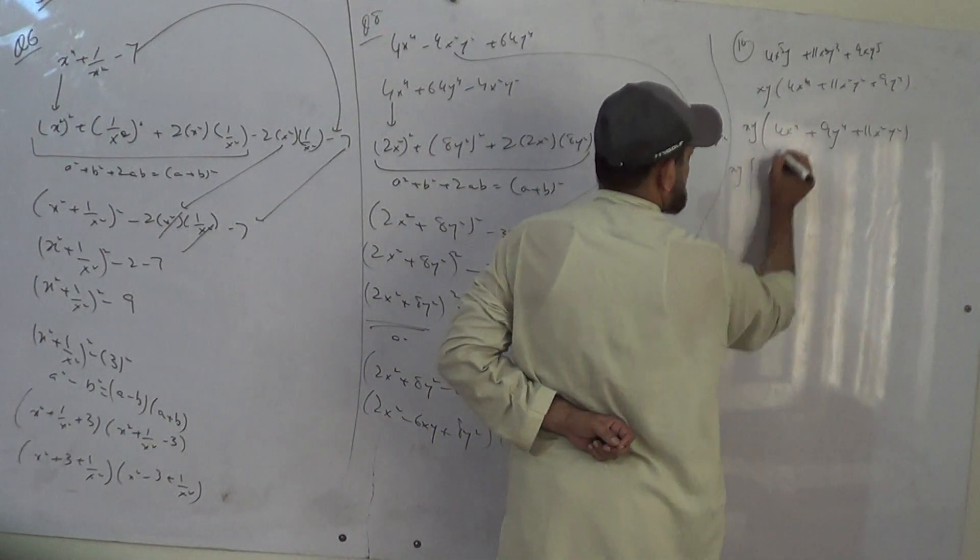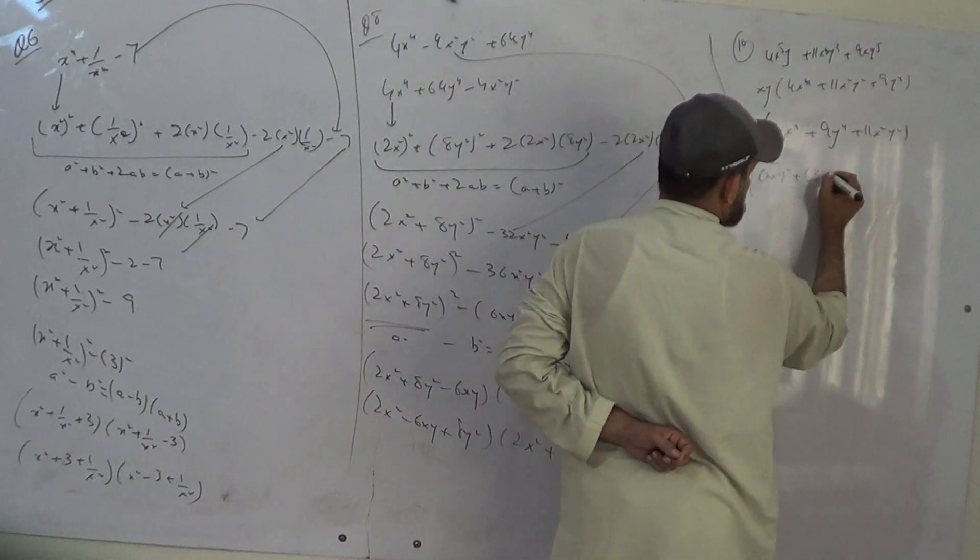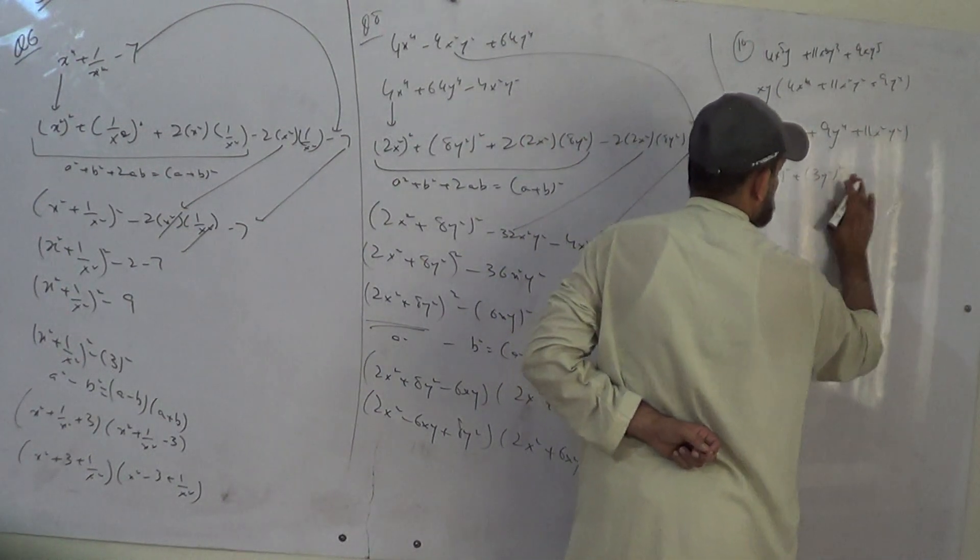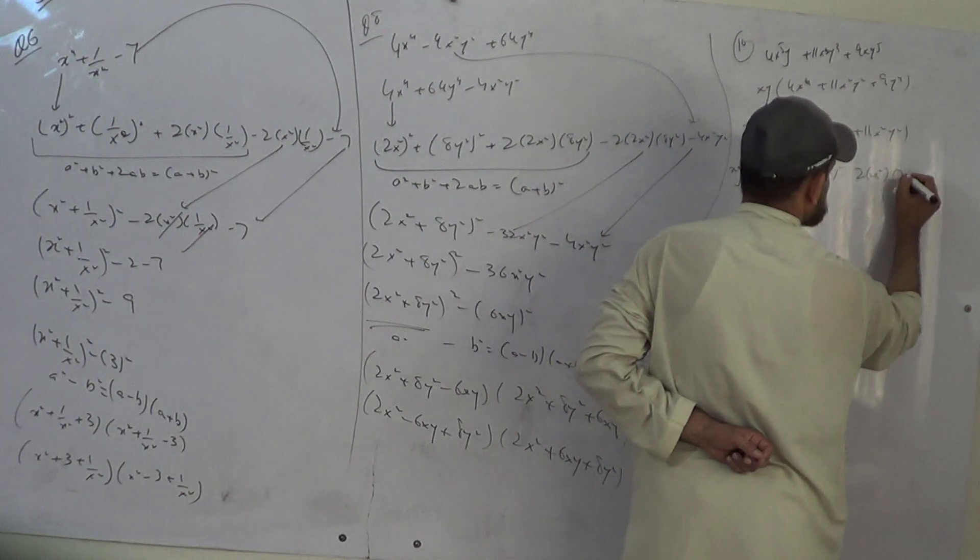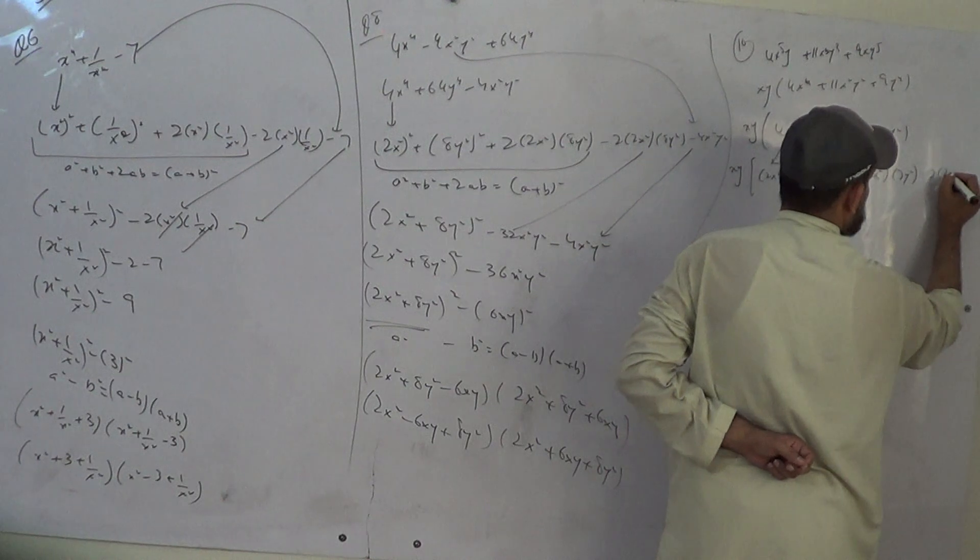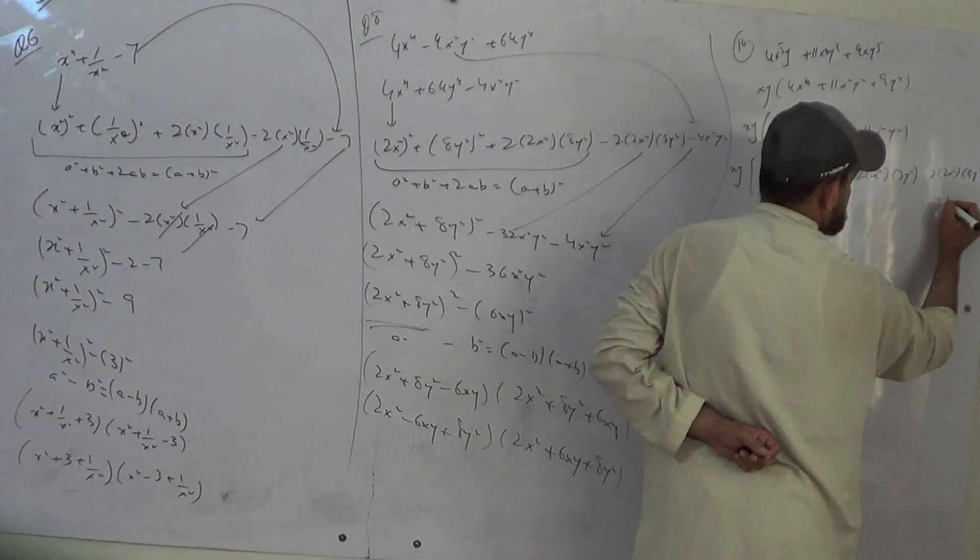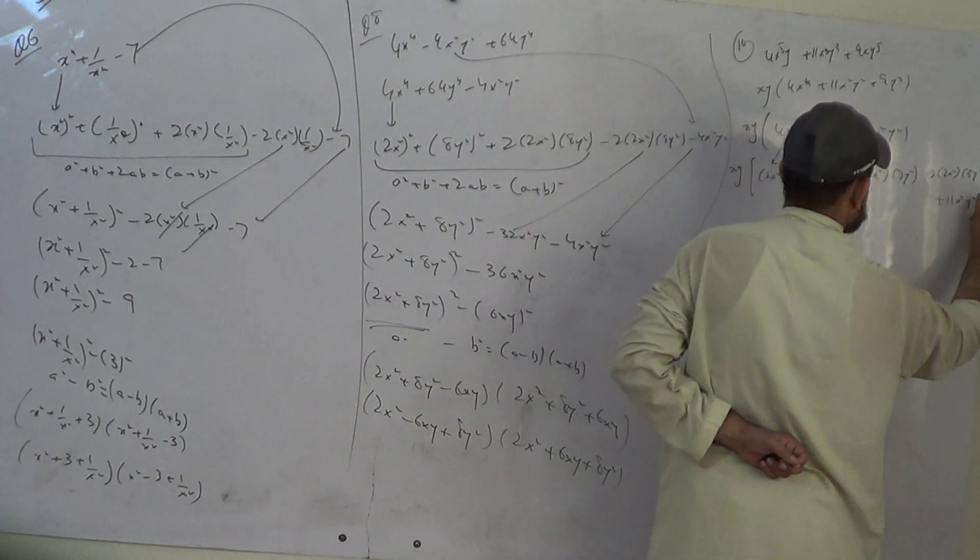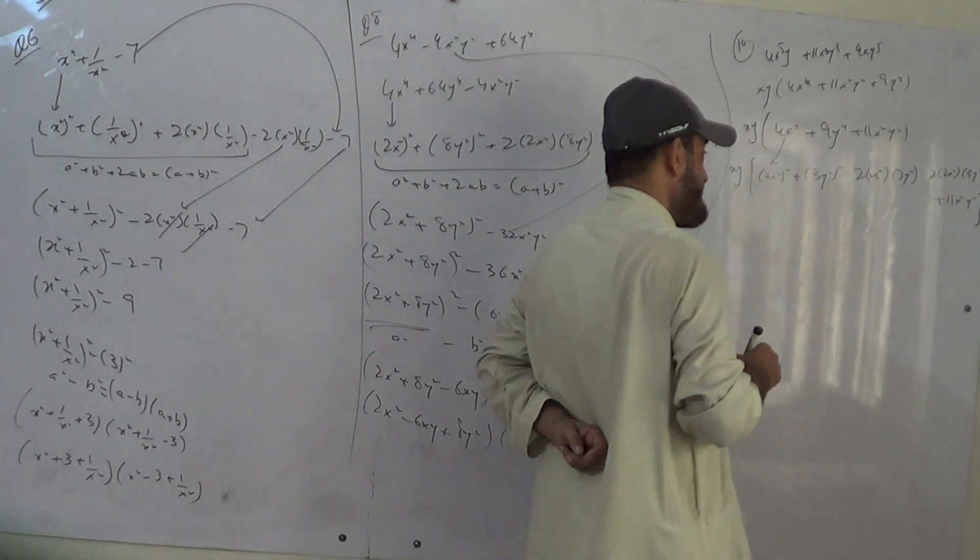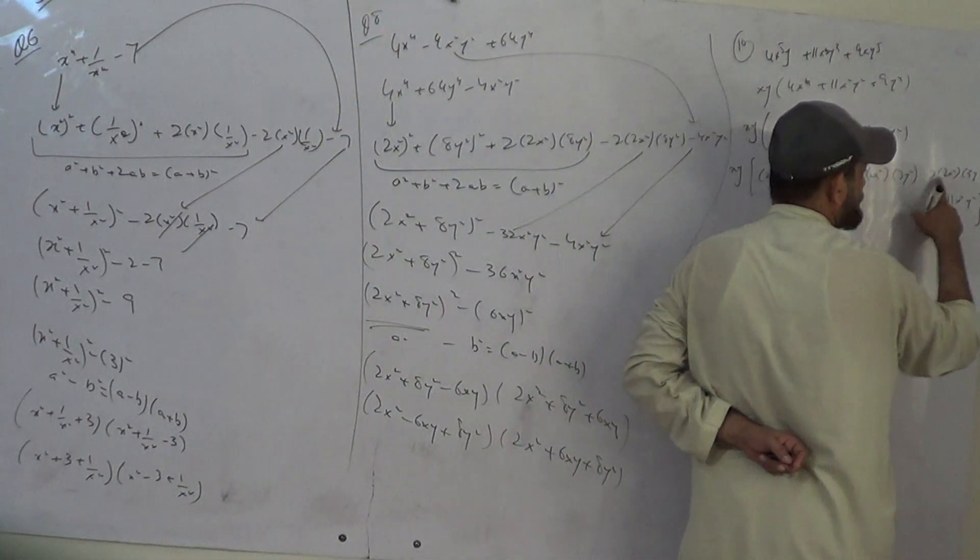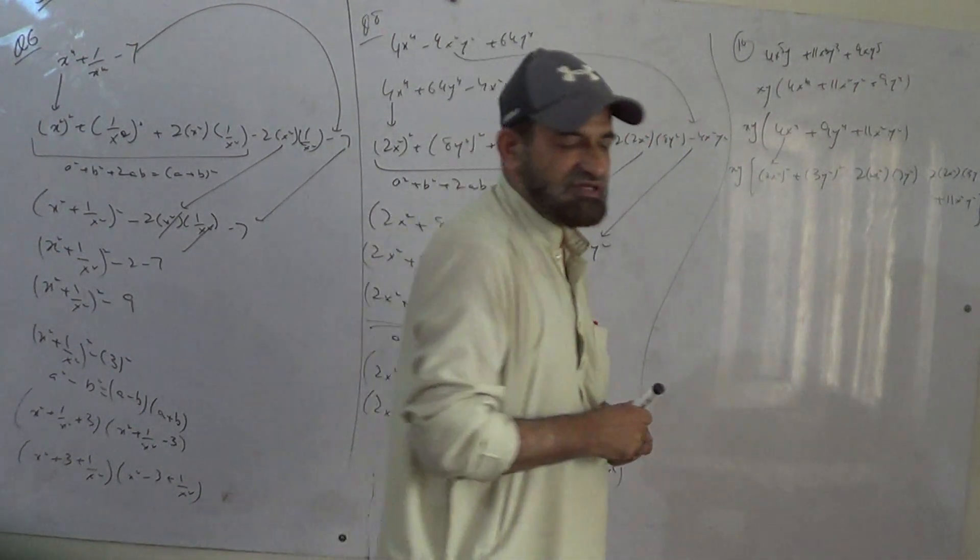xy times a square plus b square minus 2ab. 2 times a times b. If I write plus, 2 times 2 times 4 is 12 plus 11 is 21. It's not a perfect square.